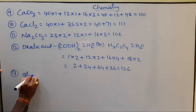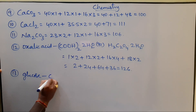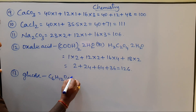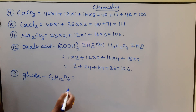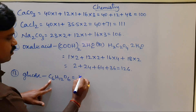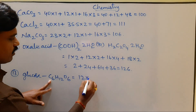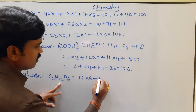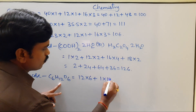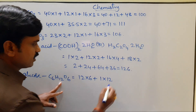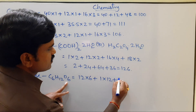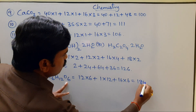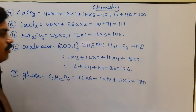Next is Glucose, C6H12O6. Six atoms of carbon, each atomic weight 12: 12 × 6, plus Hydrogen atomic weight 1 × 12 hydrogen atoms, plus 16 × 6. The total equals 180.